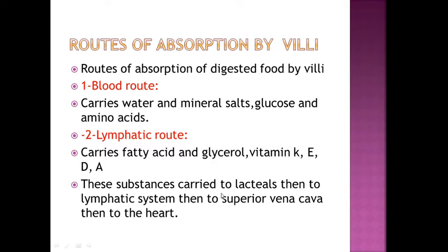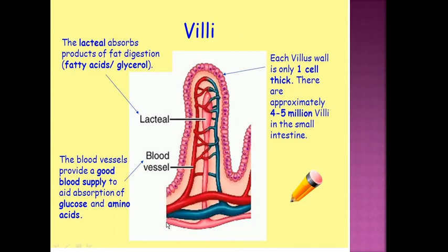These substances are carried to the lacteals, then to the lymphatic system, and then to the superior vena cava, and then to the heart. This is the structure of the villi. Can you see the lacteal in the middle? These are the blood capillaries. The lacteal absorbs the products of fat digestion, which are the fatty acids and glycerin, while the blood vessels provide a good blood supply to help in the absorption of glucose and amino acids.